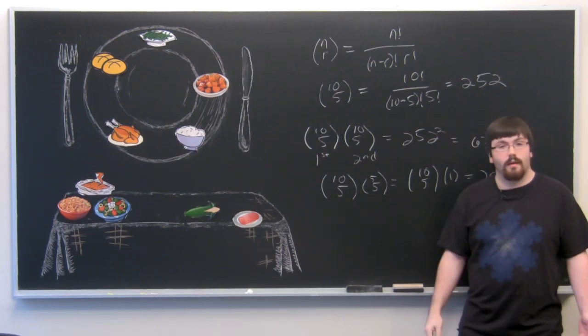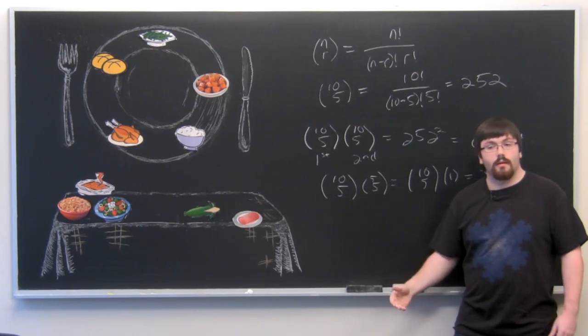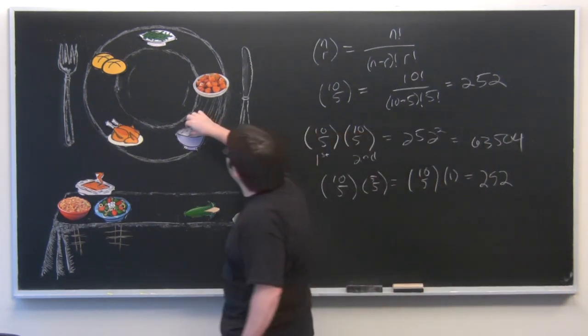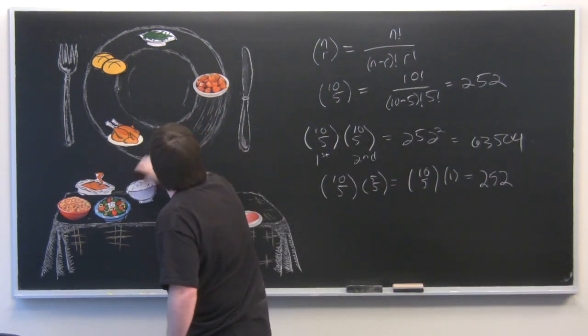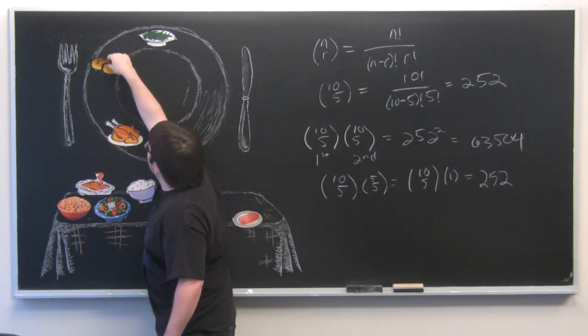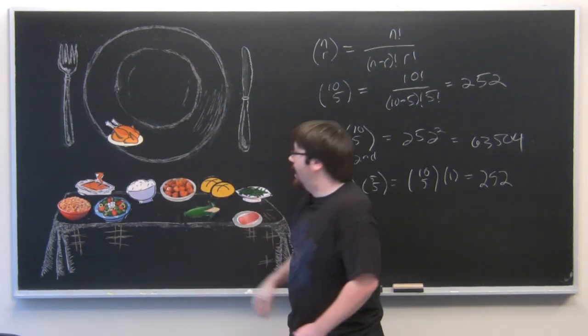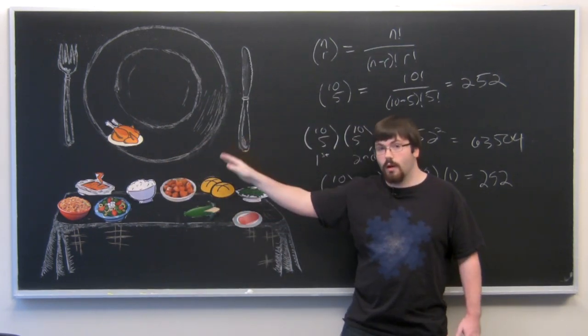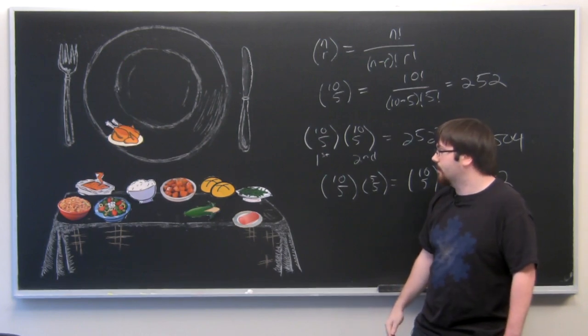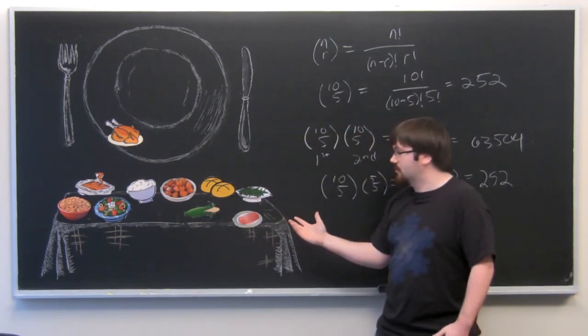But now, I don't even think that's the most likely scenario because who doesn't go up for seconds and get more turkey? I mean, it's Thanksgiving. So if we just remove some of the items on our plate here, and let's just say we know we want turkey, which means we have room for four more options on our plate. So we have four more options to pick and we're left with nine items to pick from.